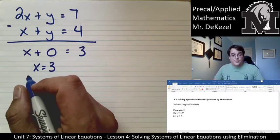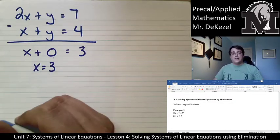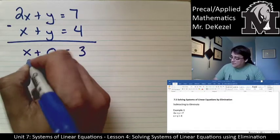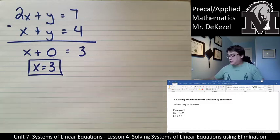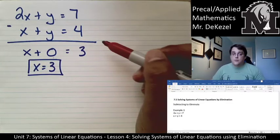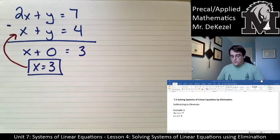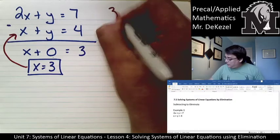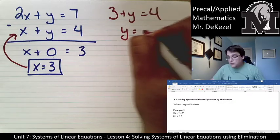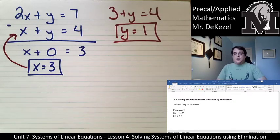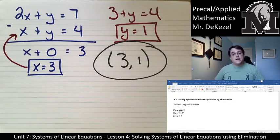That is half of what we're trying to do — find out what x and y equal, i.e., the point where these two lines intersect. We can now take x = 3 and plug it into either equation to find y. I'll plug it into the easier bottom one: 3 + y = 4, subtract 3 from both sides, y = 1. I now have both parts of the coordinate: (3, 1) is my solution.